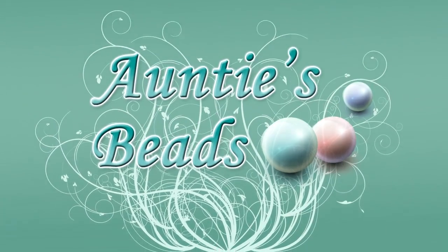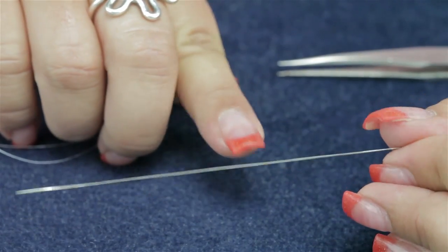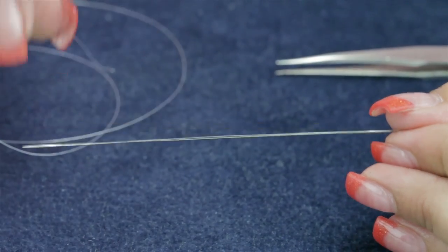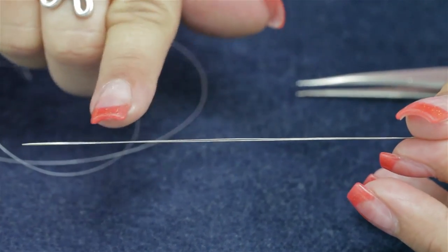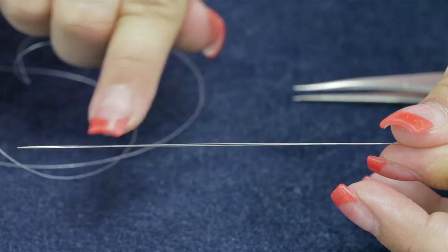I'd like to demonstrate the Beadalon big eye needle. This is a four and a half inch big eye needle, and the reason why it's called a big eye needle is that the eye of the needle runs almost as long as the needle itself does.